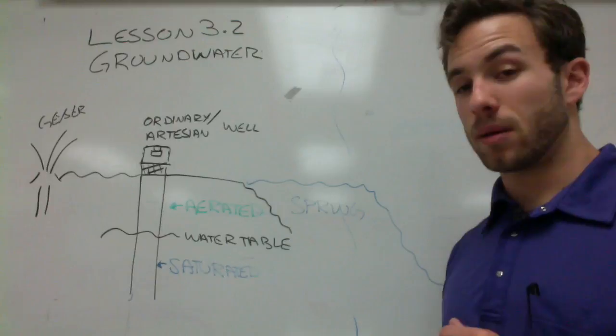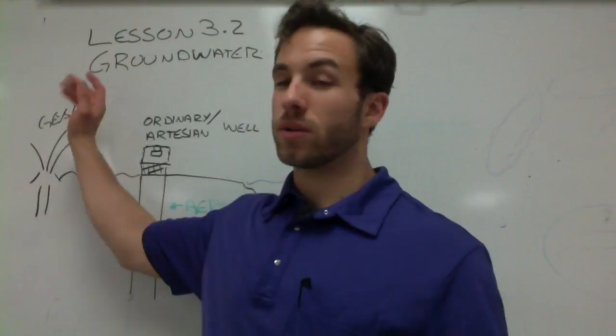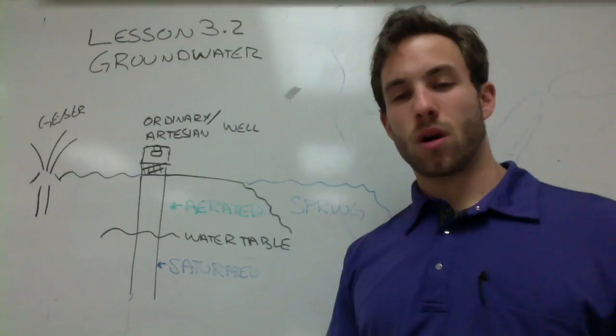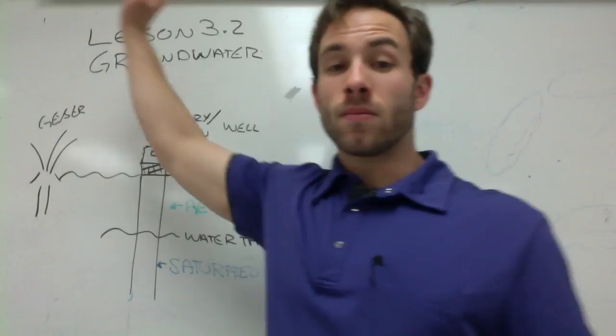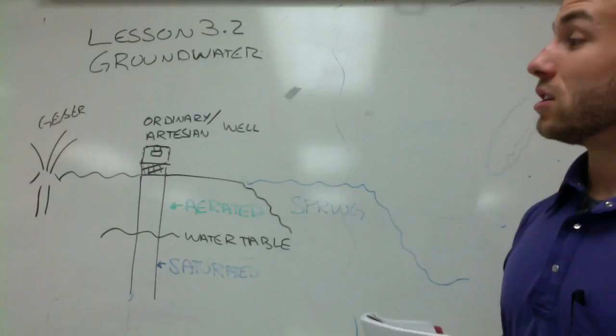A spring is an area where the water table is equal to the level of the earth's surface, so our groundwater is actually going to be on the surface. Another important source is a geyser — a pressurized zone of groundwater that can periodically erupt and shoot hot water up into the air. The reason geysers can shoot is based on a buildup of pressure caused by blockage somewhere in the pores in the earth.